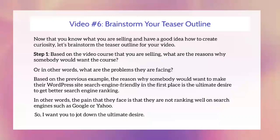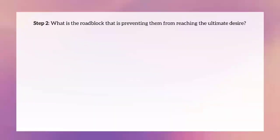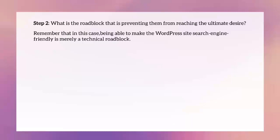Pause this video right now and jot down the ultimate desire — what does that look like in terms of the video course you are selling? Step two: what is the roadblock preventing them from reaching the ultimate desire? Is it a technical roadblock, a psychological roadblock, or a physical roadblock? In the WordPress course example, being able to make the WordPress site search-engine-friendly is merely a technical roadblock — they truly desire better rankings but can't achieve that until they resolve this technical issue.